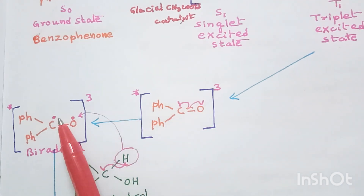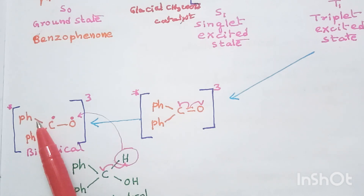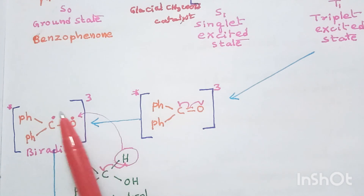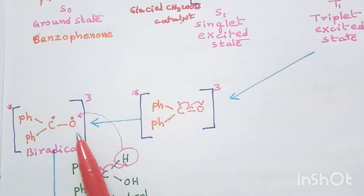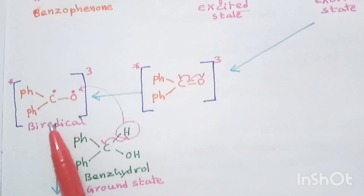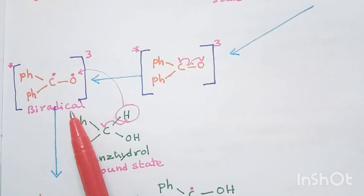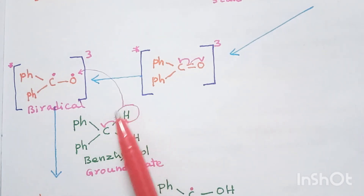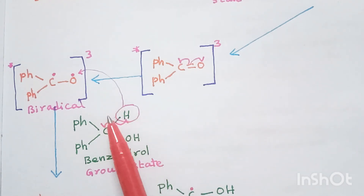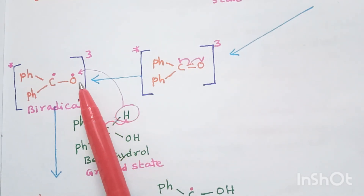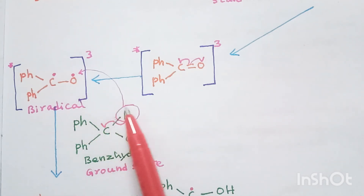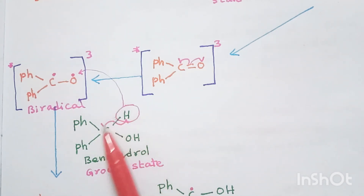In the triplet excited state T1, the pi bond between carbon and oxygen cleaves homolytically to give a biradical. The biradical consists of a Ph-Ph-C• radical and an O• radical. This oxygen radical of the biradical will then abstract a hydrogen atom.